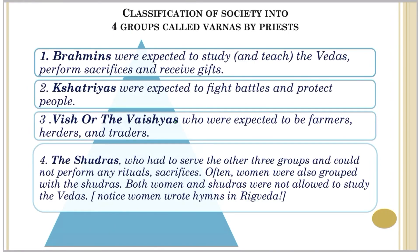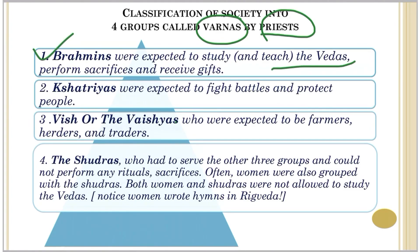Around 3000 years ago, priests divided the society into four parts called Varnas. These classifications were done by the priests of that time. At the top of the pyramid were the Brahmins, who were expected to study and teach the Vedas, perform sacrifices for Rajas, and receive gifts. Second on the pyramid were the Kshatriyas, who fought battles and protected the people.